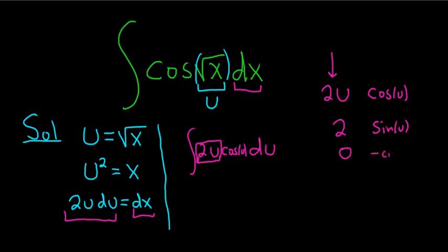Well, negative cosine, right? Because the derivative of cosine is negative sine. So if we have a negative here, it's going to make it a positive. Then you come over here and you do plus minus plus. Then you draw arrows. And that's the answer.